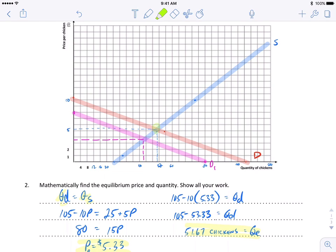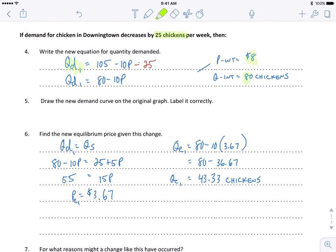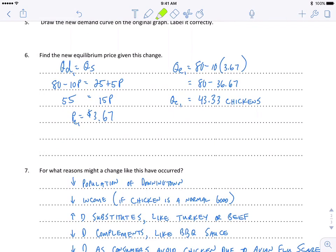And you should be able to eyeball at least an equilibrium price and quantity here. But the next step of the process asks that you find the new equilibrium price and quantity given this change. And we are now using Qd1 equal to the quantity supplied and we find a Pe1, a new equilibrium price of three dollars and sixty-seven cents, a new equilibrium quantity of forty-three and a third chickens.